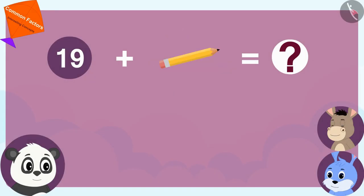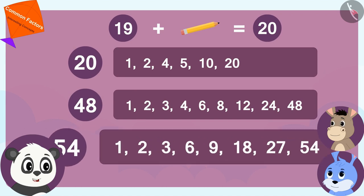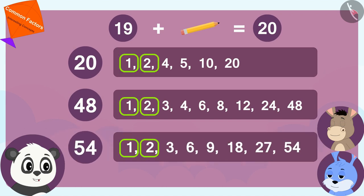If I add one more pencil to these 19 pencils, then the total is 20 pencils. But 20, 48, and 54 do not have six as a common factor.